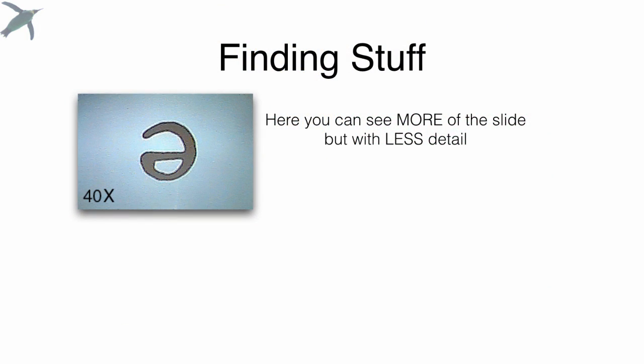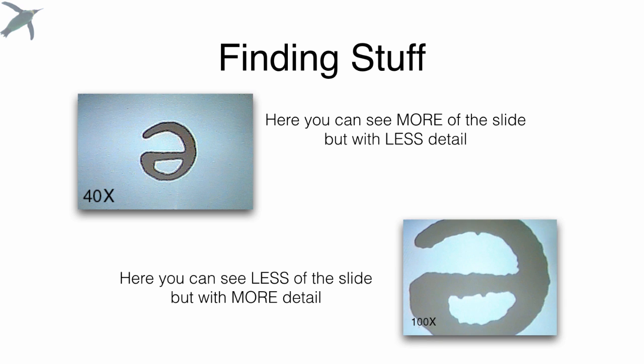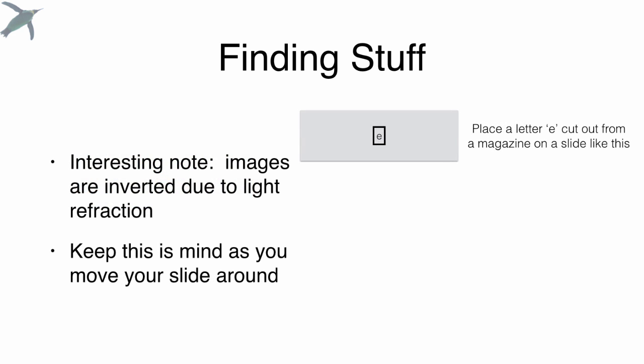Under the microscope, under a lower magnification, you see more of the slide, but less detail. As you bump up the magnification, you're going to see more and more detail. The idea is you want to start with that scanning objective and look for the stuff that's interesting and then center it and then increase your magnification. That's really a good strategy.